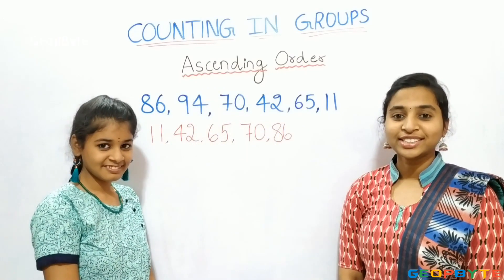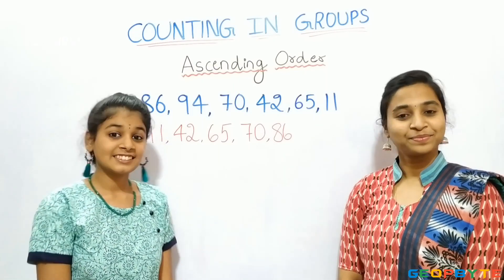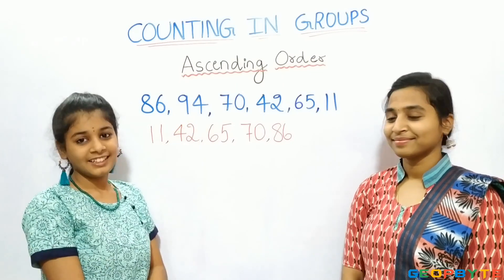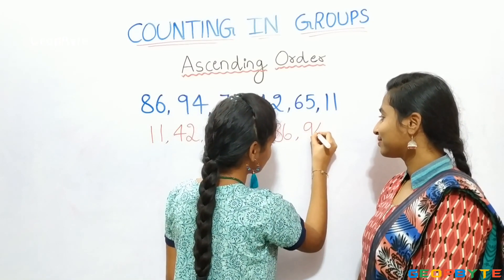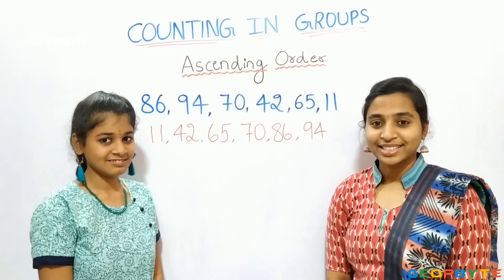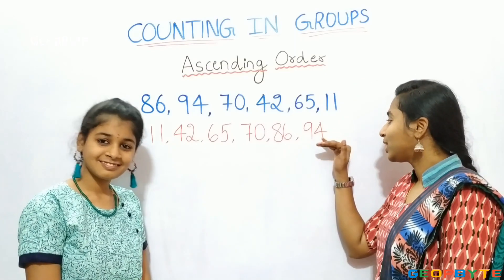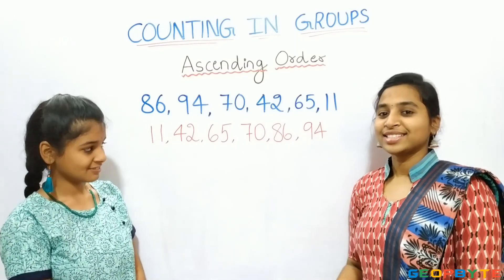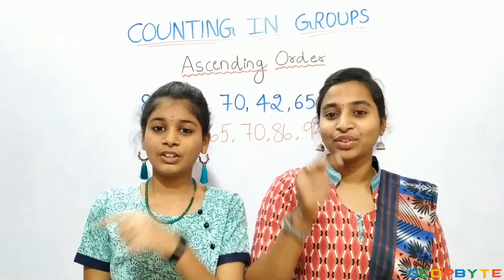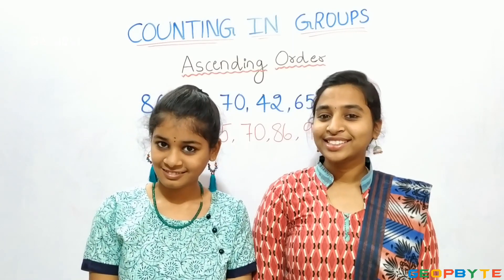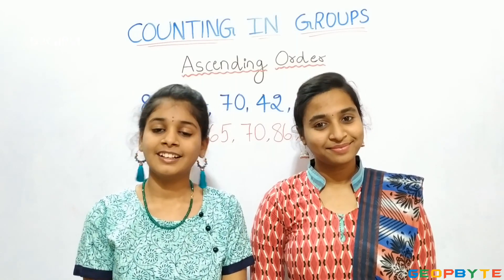Which is the largest number in this arrangement? Yes, correct answer — 94 is the largest number. See kids, now we have arranged the numbers from the smallest to the largest number. This is ascending order. Hey kids, there is a small activity for you. Try to practice ascending order. Now we have completely understood the topic: ascending order.